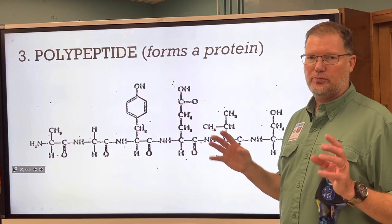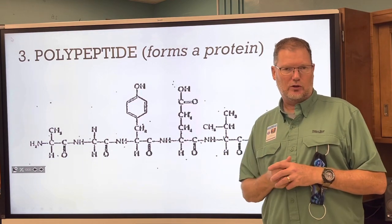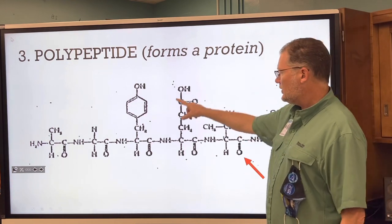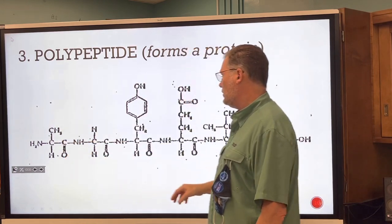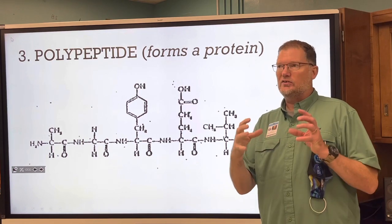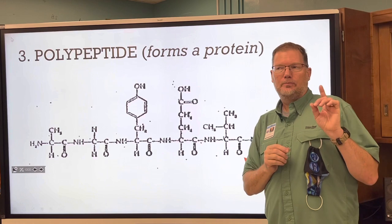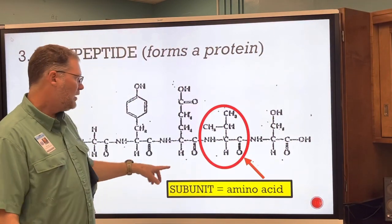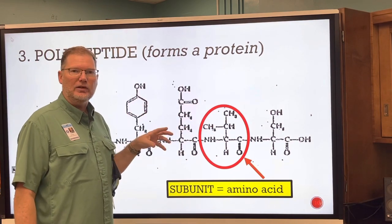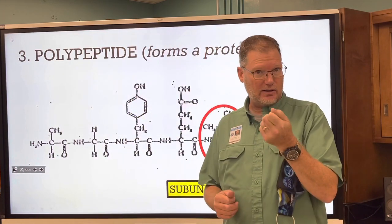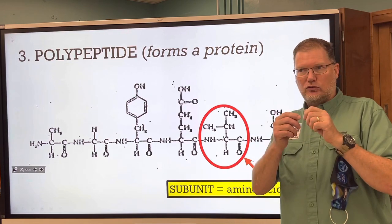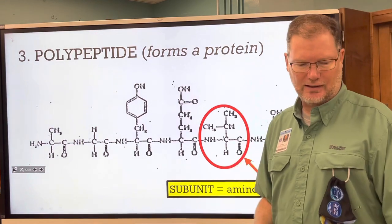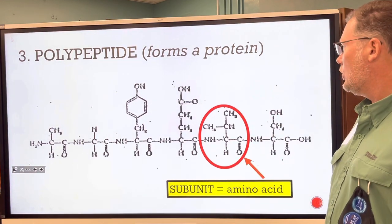The polypeptide is what forms a protein. Proteins form a little differently — they still make a polymer, but the subunits called amino acids are different. They're like a puzzle piece, almost like a bike lock dial with numbers one through four — you can have a certain number of combinations. If you change the kinds of amino acids, you make a multitude of different kinds of proteins. An amino acid — circle that in your notes — is the subunit for the polypeptide.